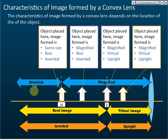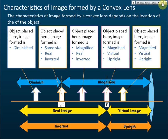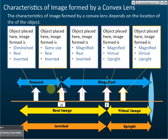If we put the object in the section beyond 2F, the image is diminished, real, and inverted. This chart helps you memorize the characteristics of the image for objects at different positions. Note that all size comparisons — magnified, same size, or diminished — are relative to the size of the object.